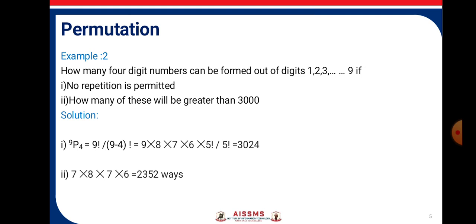Consider the second example. How many 4-digit numbers can be formed out of digits 1, 2, 3, 4, 5, 6, 7, 8, 9 if no repetition is permitted? How many of these will be greater than 3,000?